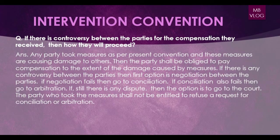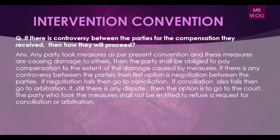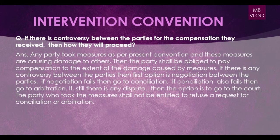A question that can be asked by the examiner: if there is controversy between parties over compensation, how shall they proceed? If any party took measures under this convention and those measures caused damage to others, that party shall be obliged to pay compensation to the extent of the damage caused. If controversy arises, the first option is negotiation between the parties. If negotiation fails, go to conciliation. If conciliation also fails, go to arbitration. If still unresolved, the option is to go to court. The party who took the measures shall not be entitled to refuse a request for conciliation or arbitration.